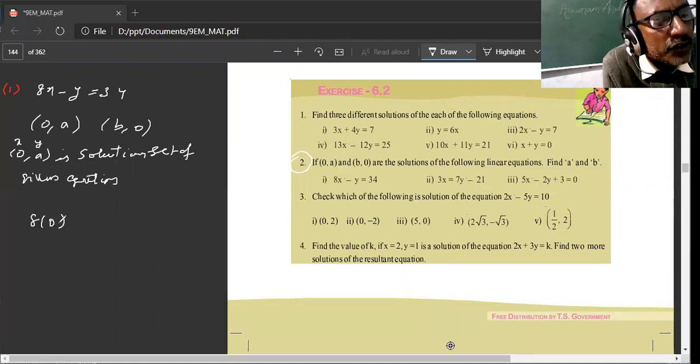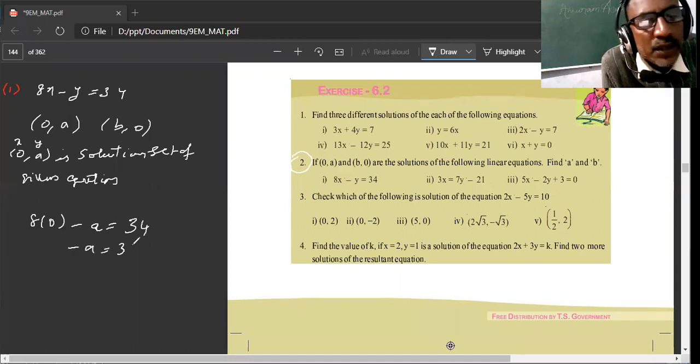That means, 8 times 0 minus y value is a. That is equal to 34. So, 8 zeros are 0. So, minus a is equal to 34. Therefore, a is equal to minus 34.